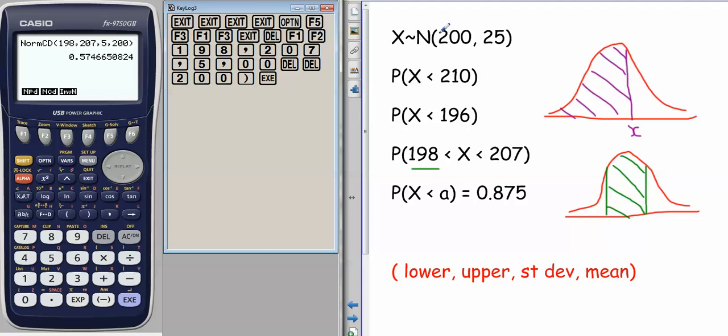I know that the probability for this normal distribution of a value falling between 198 and 207 is 0.5746. Obviously, if you did this in the table, you'd have to do less than 207, then you'd have to do less than 198, but actually you'd have to do a 1 minus the positive value of that. It would take much, much longer.